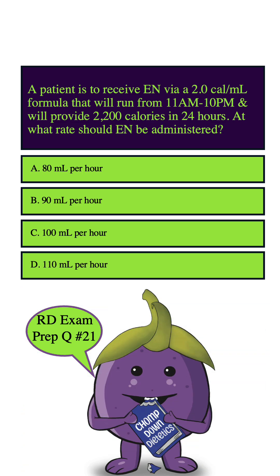Let's highlight our keywords: EN via a 2.0 cal per ml formula, 11 a.m. to 10 p.m., 2,200 calories, and rate.